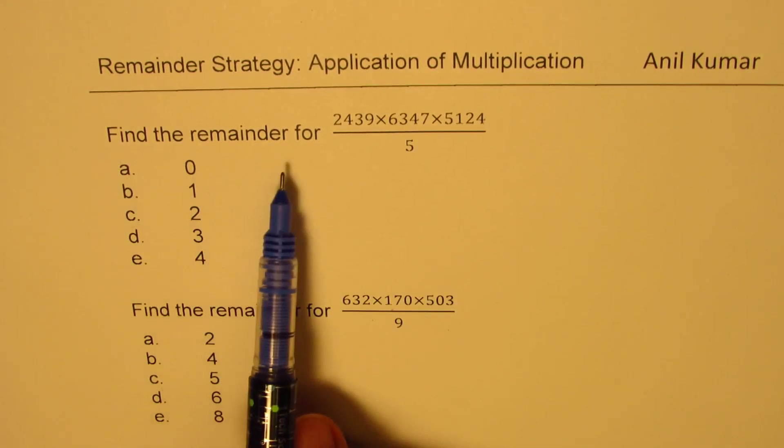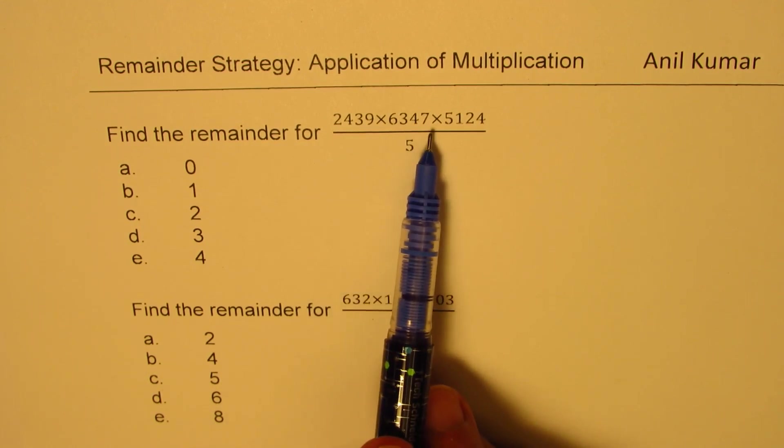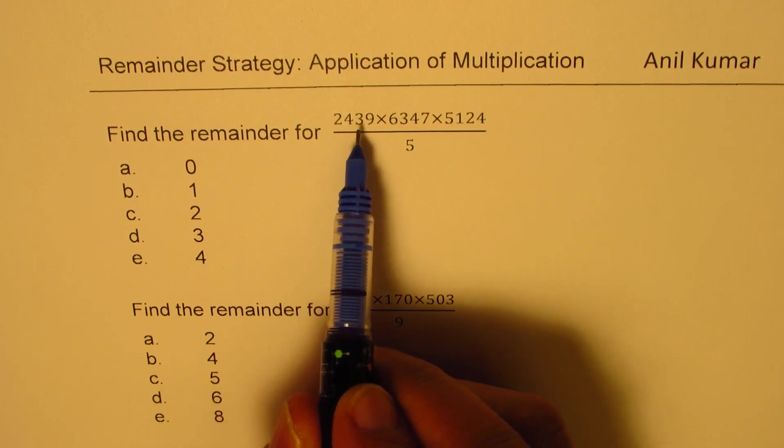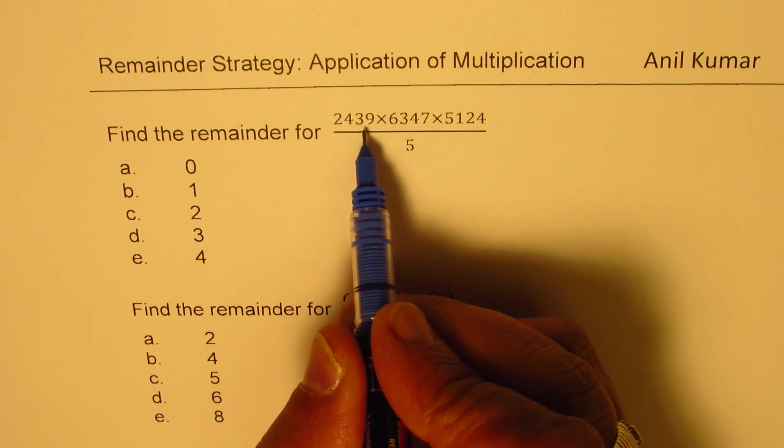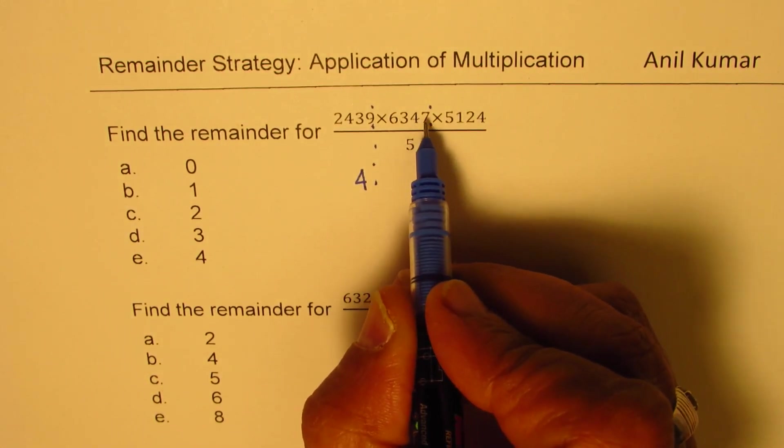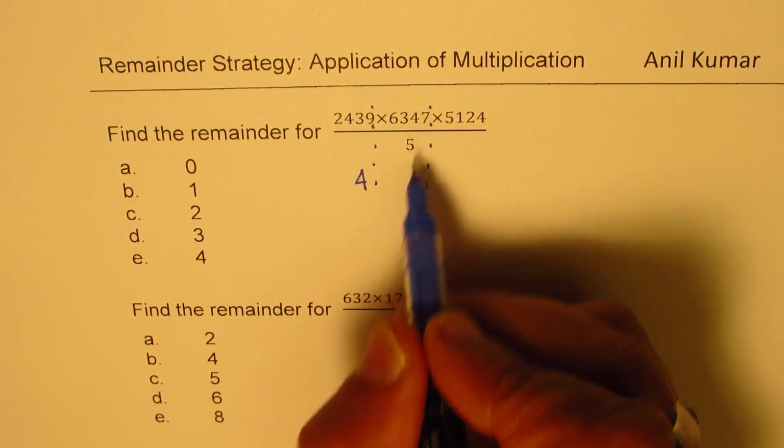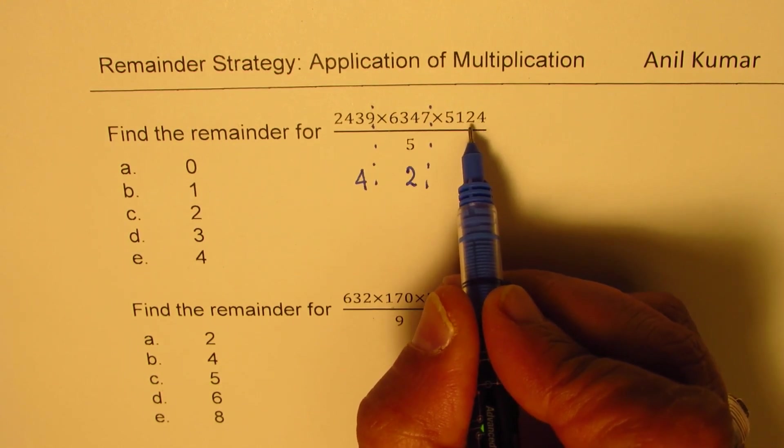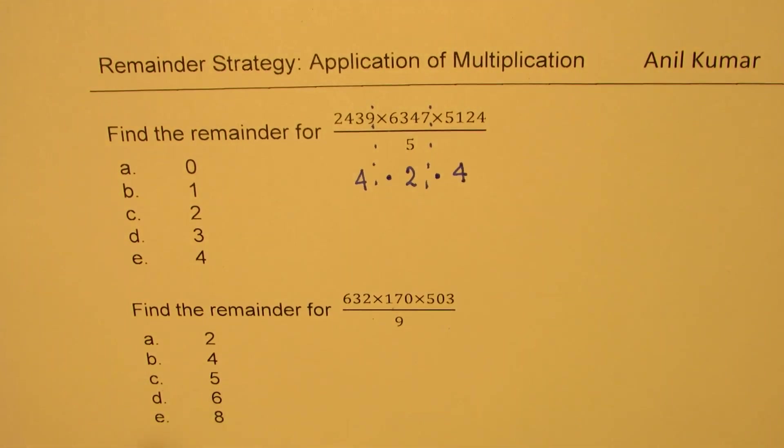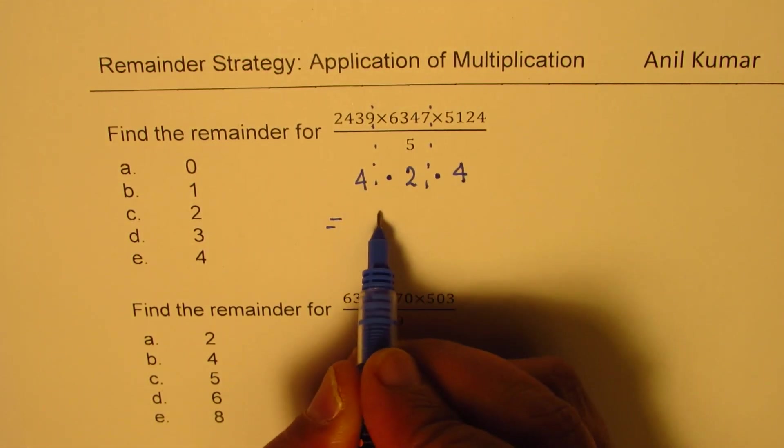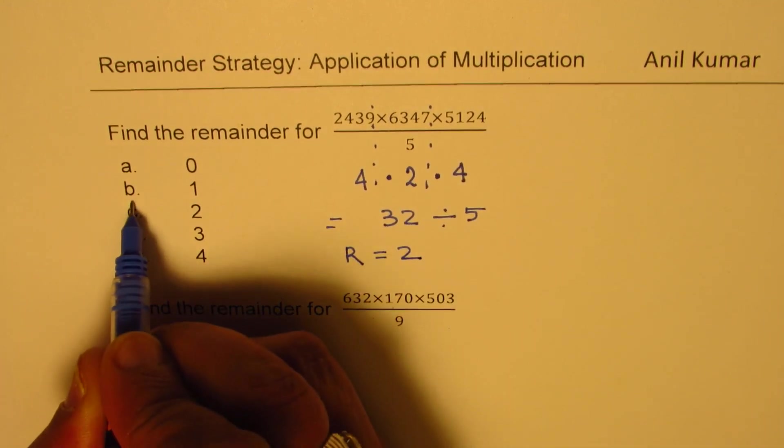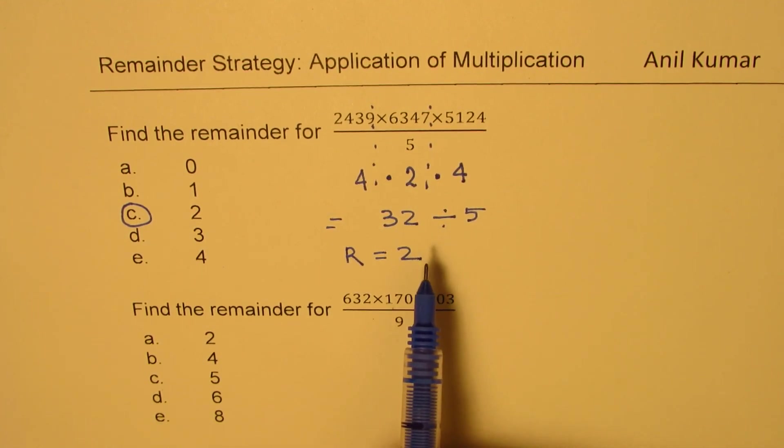In our first example, we need to find the remainder for 2439 times 6347 times 5124 when divided by 5. So, we will actually pick up the remainders for each individual. When you divide 2439 by 5, the last number could be 35, 4 is the remainder. So, we get 4 as the remainder when you divide this number with 5. The other number when you divide by 5, 47 is at the end, 45 is fully divisible, 2 is the remainder. In this particular case, we could go through 20 to 0, but there is this 4 here. So, 4 has to be the remainder. So, the final remainder is going to be product of all of them. So, which is giving us 8 times 4, which is 32. So, you need to divide 32 by 5 to get the remainder. Clearly, the remainder is equal to 2. And so, the answer is C. So, this type of question could be done in less than a minute.